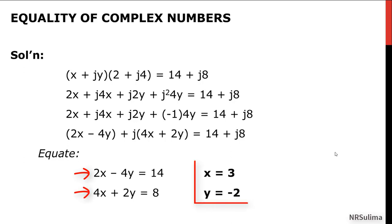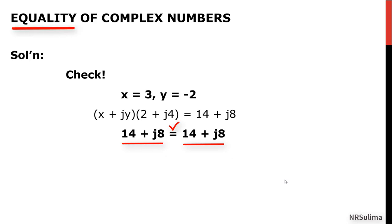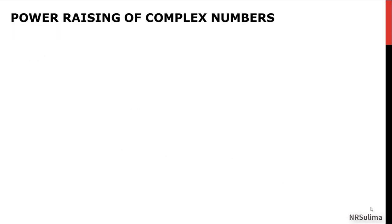The values of X and Y are equal to 3 and negative 2, respectively. If we check our original equation with X equal to 3 and Y equal to negative 2, the left side of the equation should be equal to the right-hand side. And that's what we mean by equality of complex numbers.